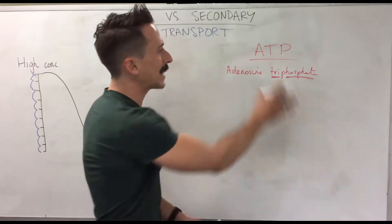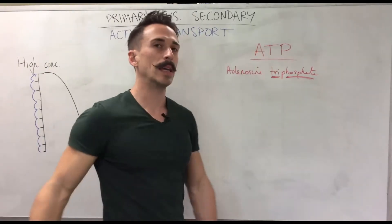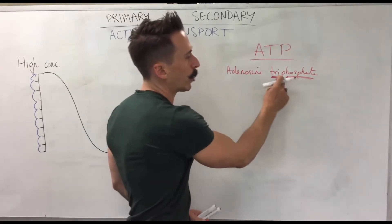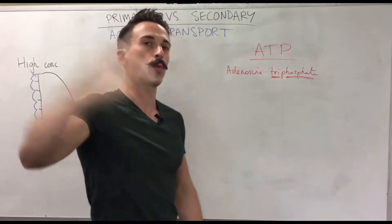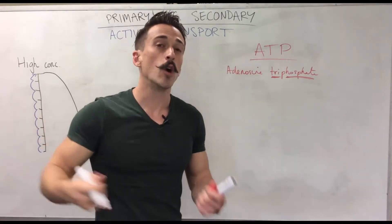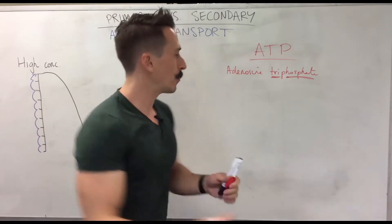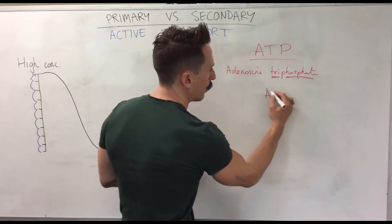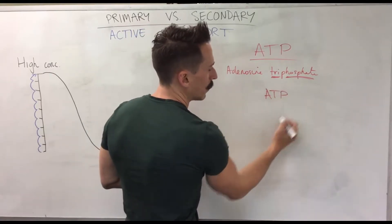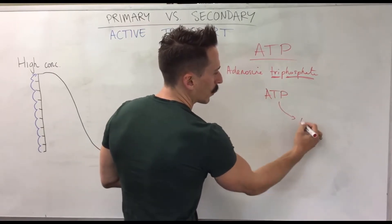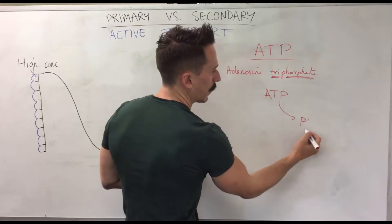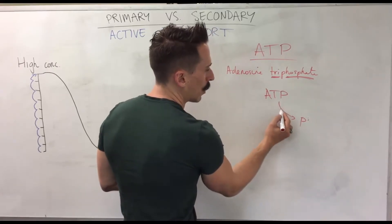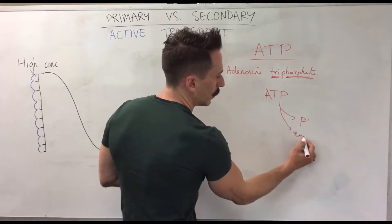In this ATP there is stored energy. What happens is if we split off one of these three phosphates, we release energy. You can go from ATP, split off one of these phosphates, and at the same time give off energy.